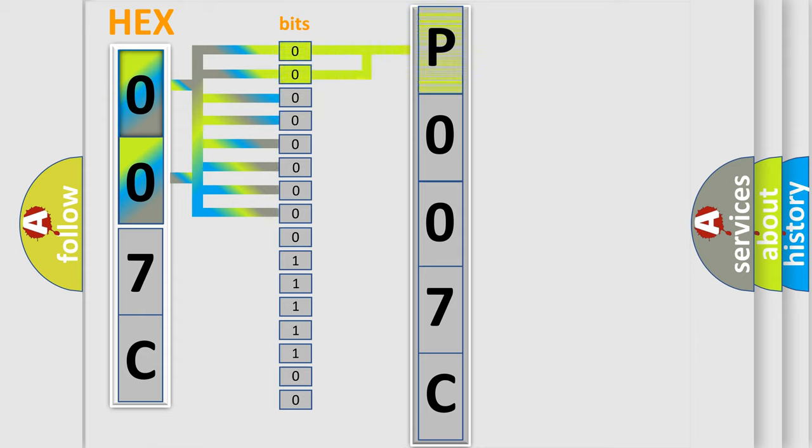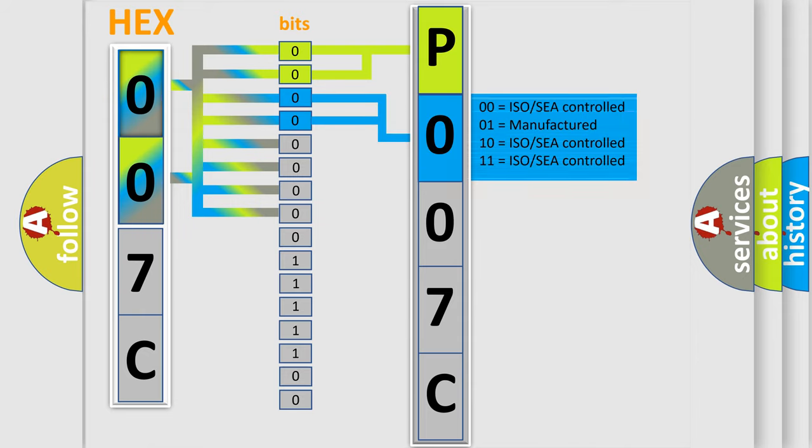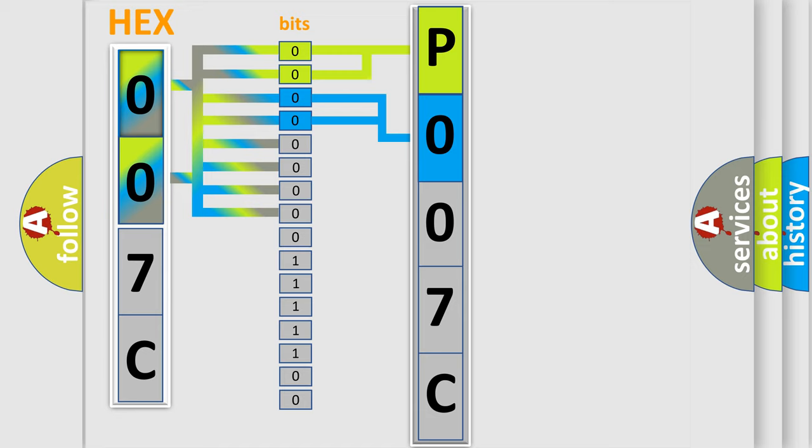By combining the first two bits, the basic character of the error code is expressed. The next two bits determine the second character. The last bit styles of the first byte define the third character of the code.